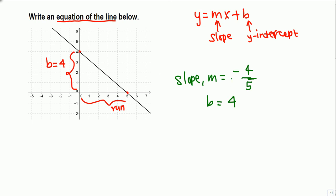So we use y equals mx plus b to write the equation of the line. Y equals negative 4 over 5 x plus b. B is 4.